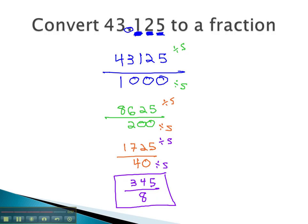The fraction 345 over 8 is equal to the decimal 43.125.